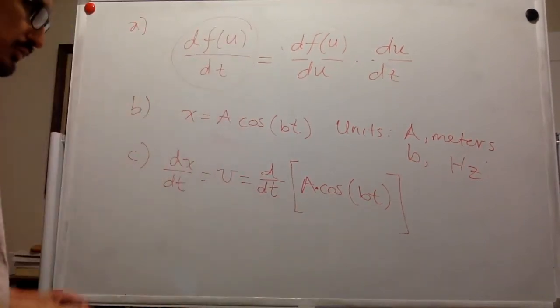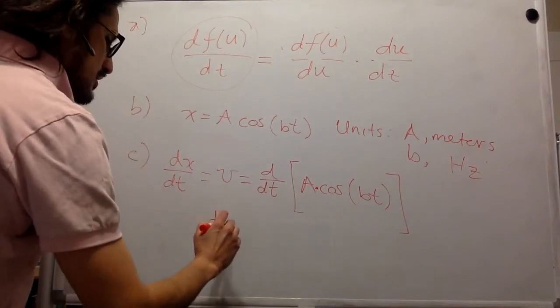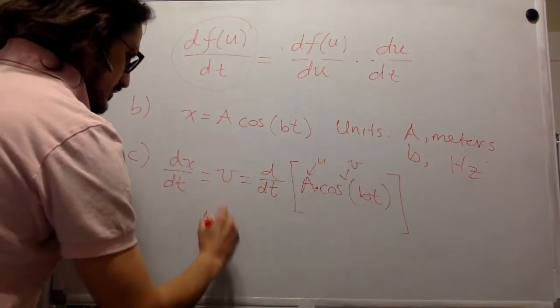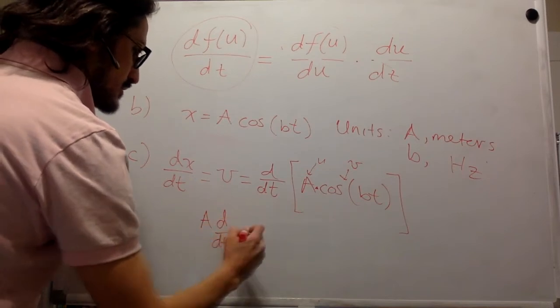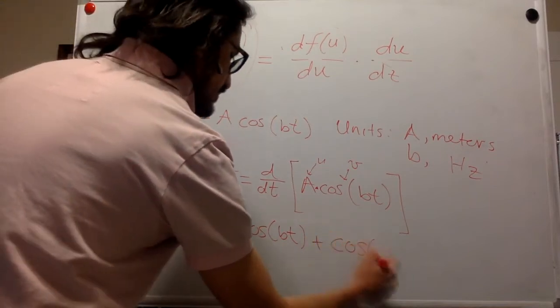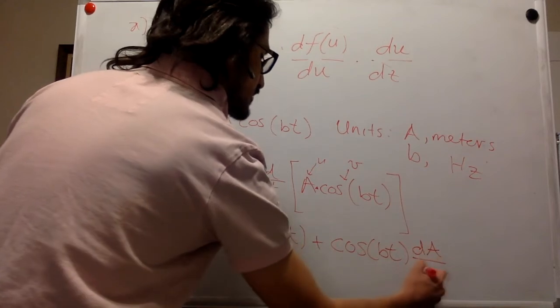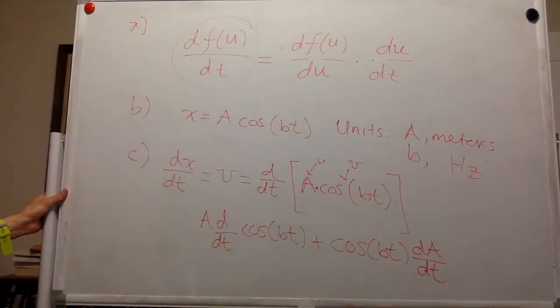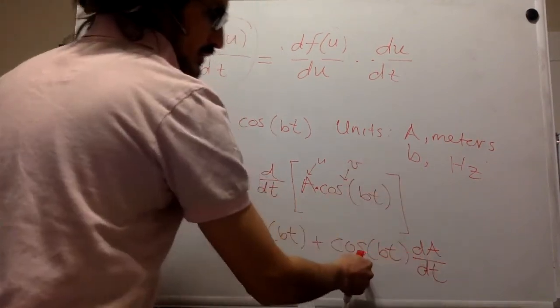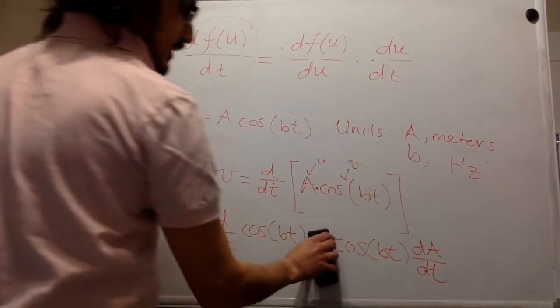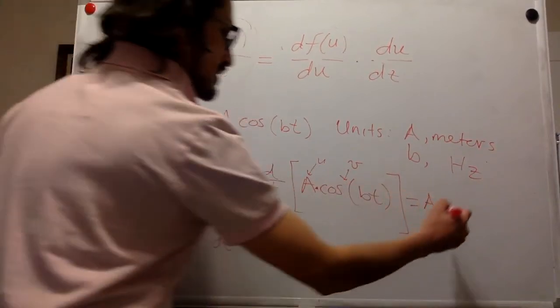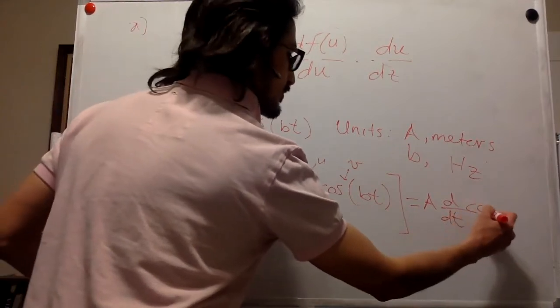So that means this is going to be A derivative with respect to time of cosine of Bt plus cosine of Bt derivative of A with respect to time. But we are told in the problem, and we know that A is a constant, so the derivative of a constant is 0. So this whole thing is 0. So then this is equal to A derivative with respect to time of cosine Bt.